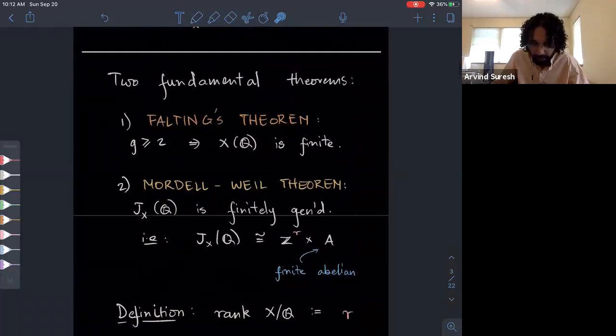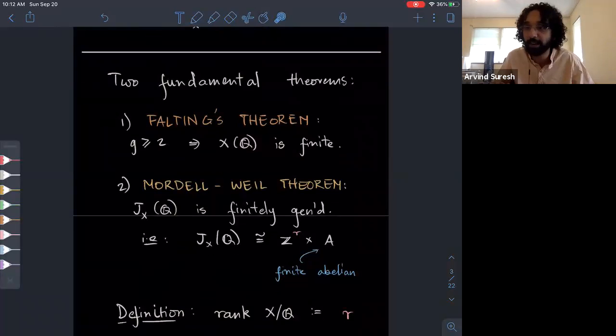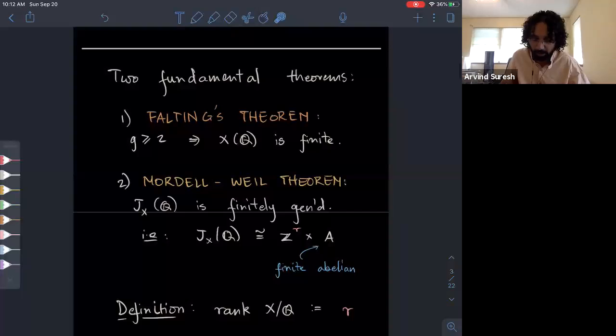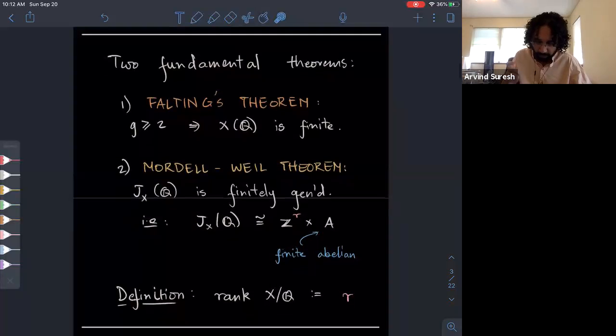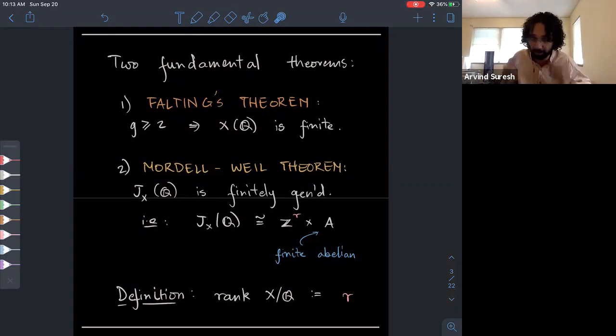Today I'll need two fundamental theorems. These are finiteness theorems. The first one is due to Faltings. It says that if genus is at least two, then the set of Q points is finite. The Mordell-Weil theorem says similarly that the group of Q points on your Jacobian is finitely generated. You can express this abelian group as the product of a free part, which is Z to the R, and a finite abelian group, the torsion part. The rank of X over Q or the Mordell-Weil rank of X is just the rank of the free part, so it's this integer R.